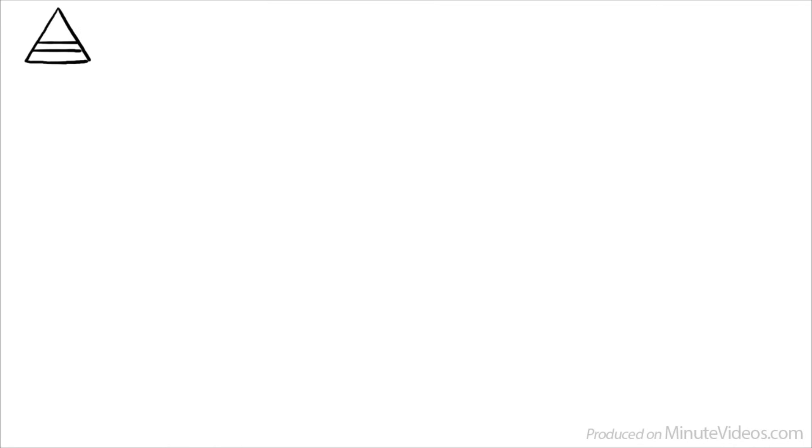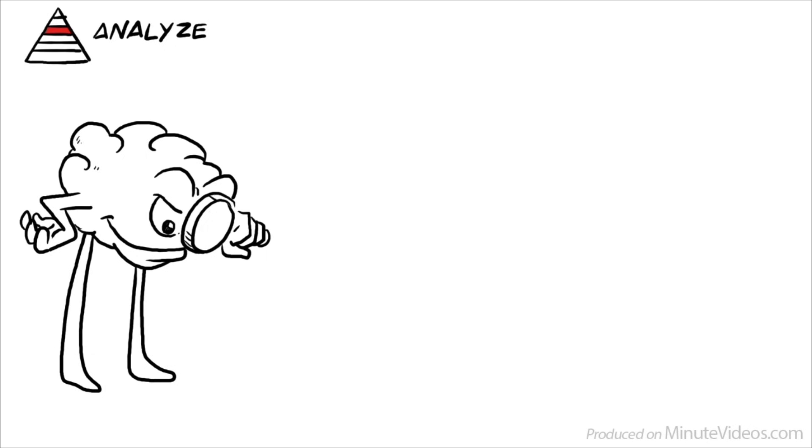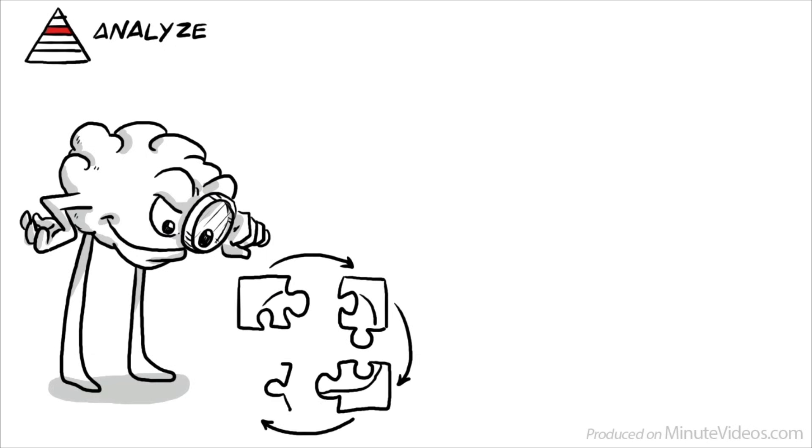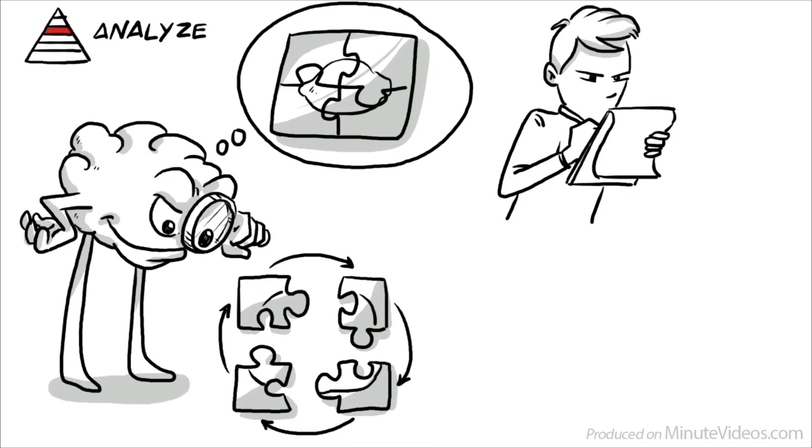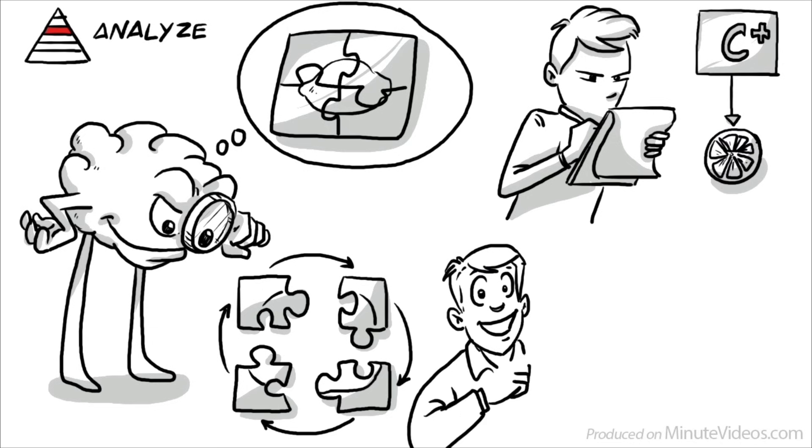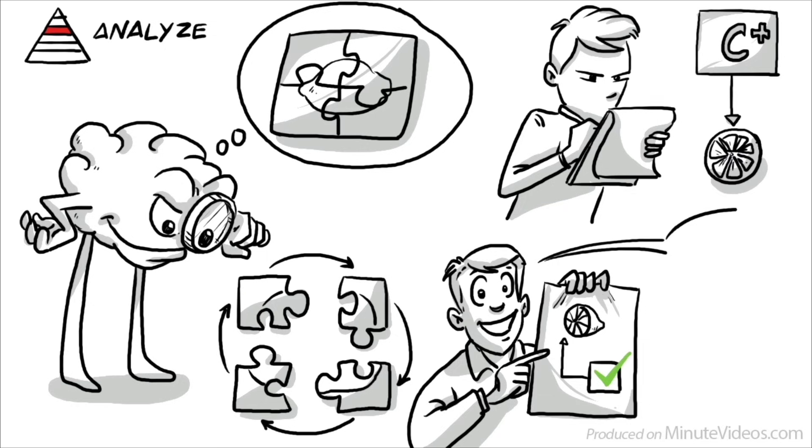On the fourth level, we learn to analyze. This involves examining and breaking down information into components, determining how the parts relate to one another, and finding evidence to support generalizations. We study the lemon flesh, examine the skin, and look at levels of vitamins. We conclude that we can eat everything inside while the skin tastes bitter and contains traces of toxic pesticides. It ought not to be consumed.